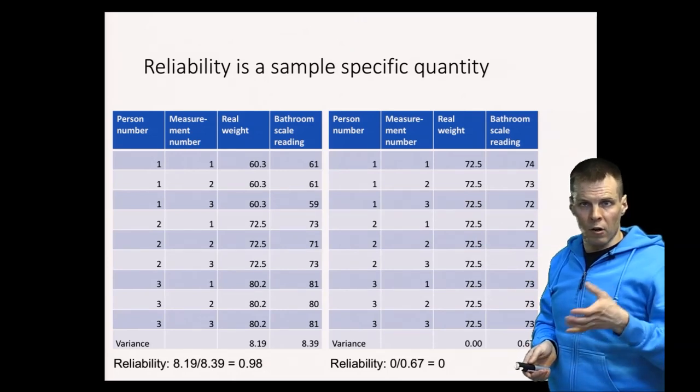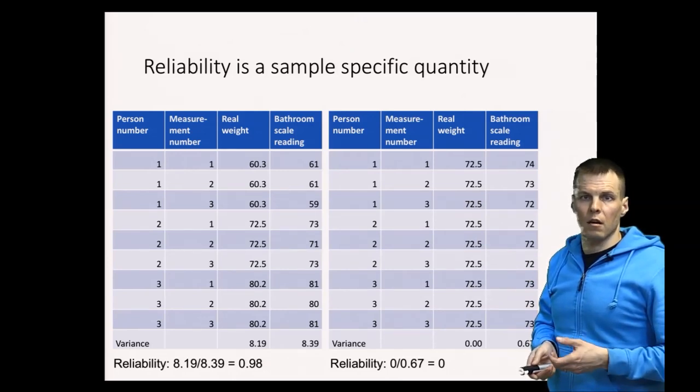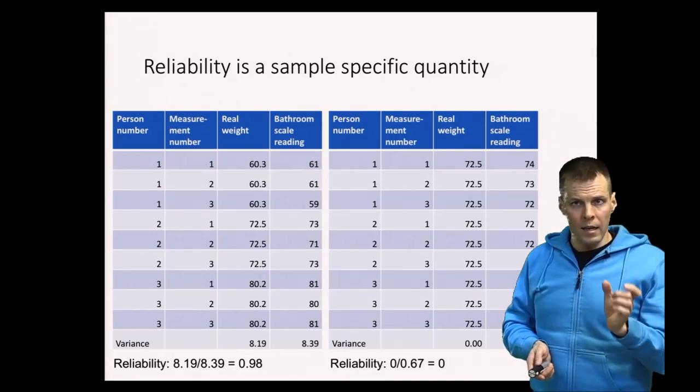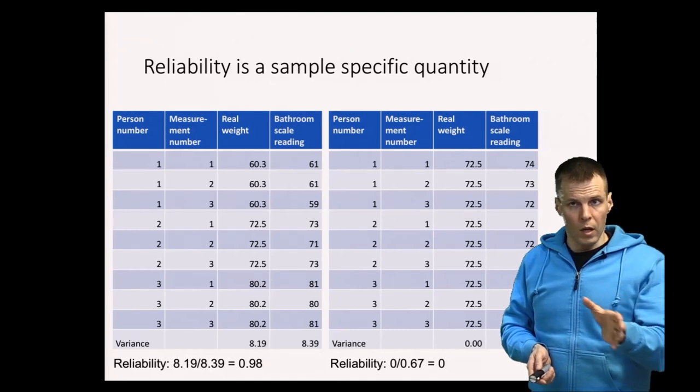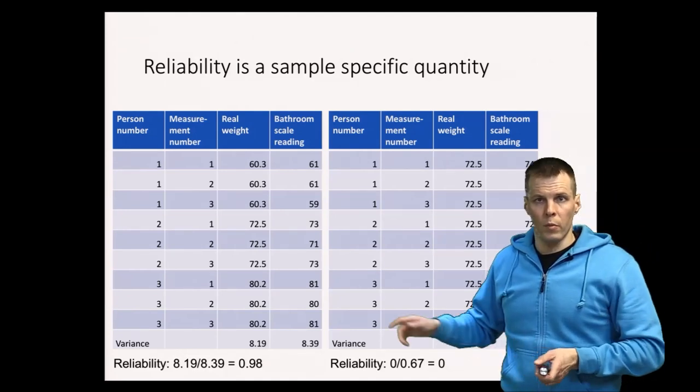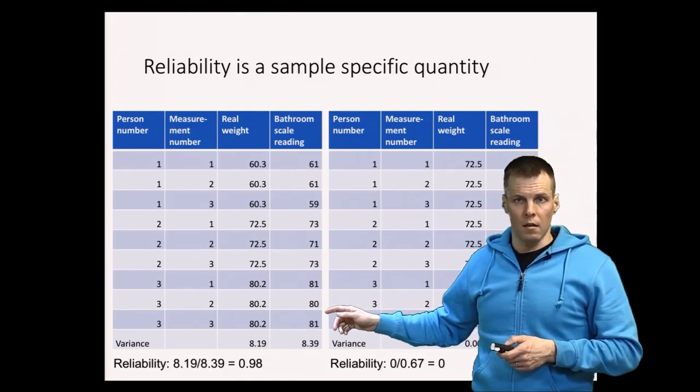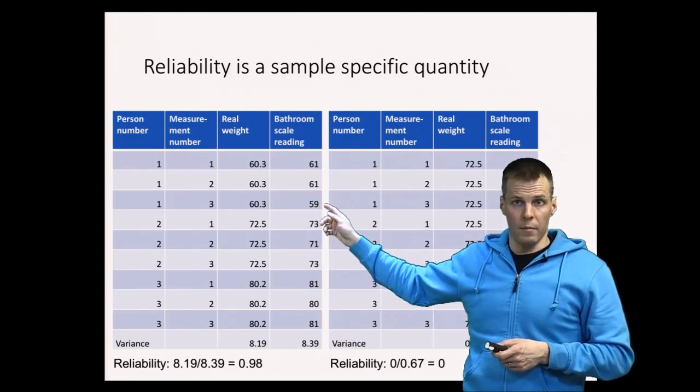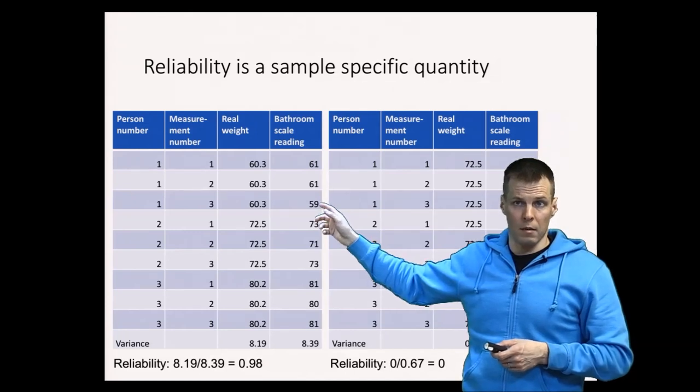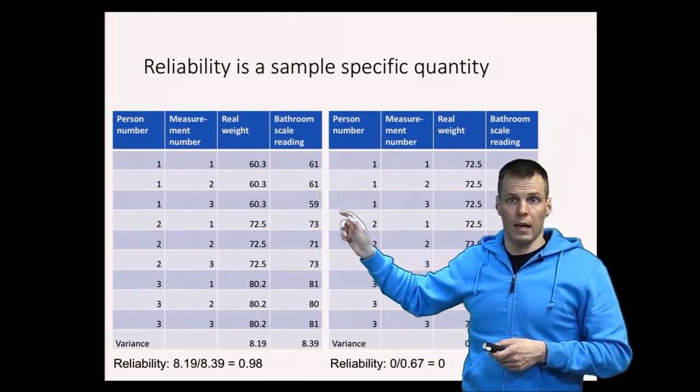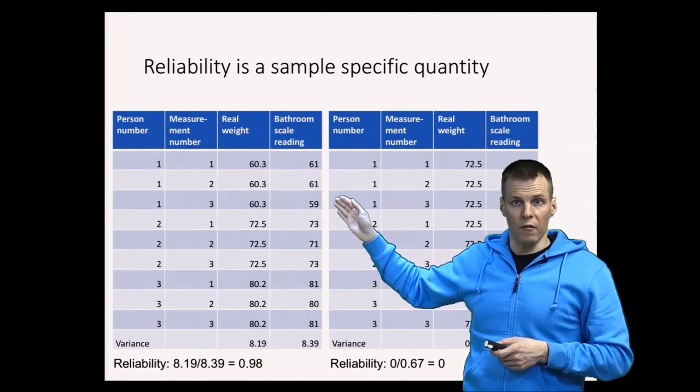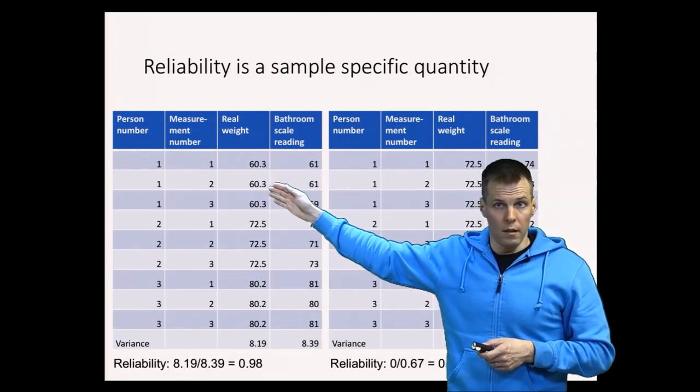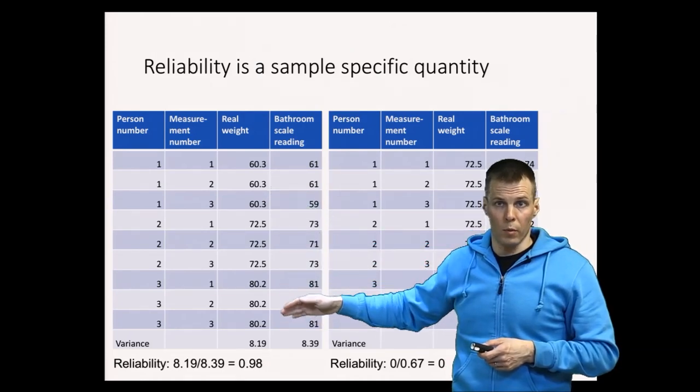One way to understand, or another way to understand this issue, is that our reliability is an index of precision compared to the required precision. So here we have, this is slightly imprecise because we have, for example, this person, there are weights, the measured weights vary between plus and minus one kilo. But that is a sufficient degree of precision to say that this person is the lightest person because there is so much variation in the real weights.